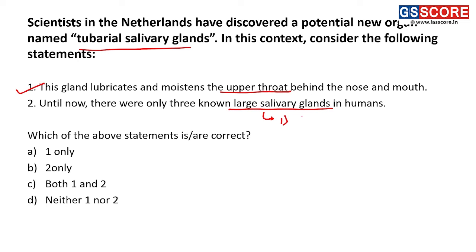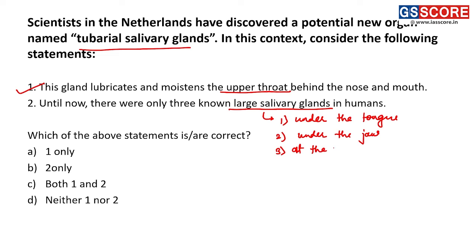The three previously known salivary glands were: first, under the tongue; second, under the jaw; and third, behind the cheek at the back of the jaw. Now we have a fourth one, the tuberial salivary gland. Both statements are correct, and the answer is C, both one and two.